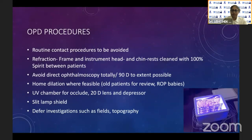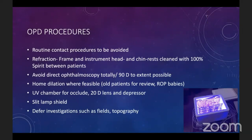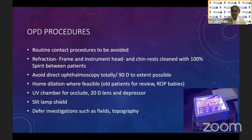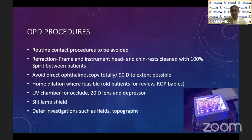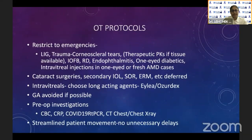The direct ophthalmoscope is to be avoided completely, and the 90D lens also to the extent possible. Home dilation, where feasible, is advised for patients as well as for ROP babies. A UV chamber, as shown in the picture, is used for sterilizing the occluder, 20-diopter lens, and depressor. A slit lamp shield is mandatory. Investigations such as visual fields and topography are to be given appointments at a later date.